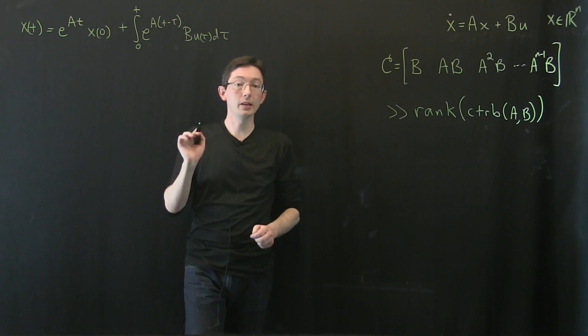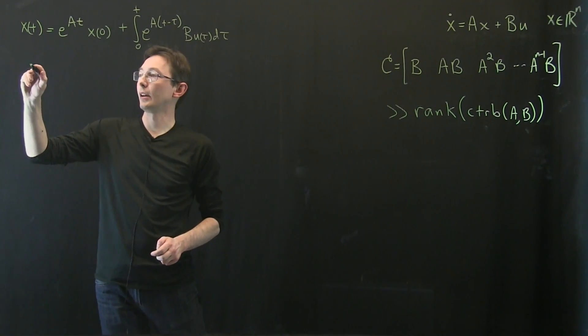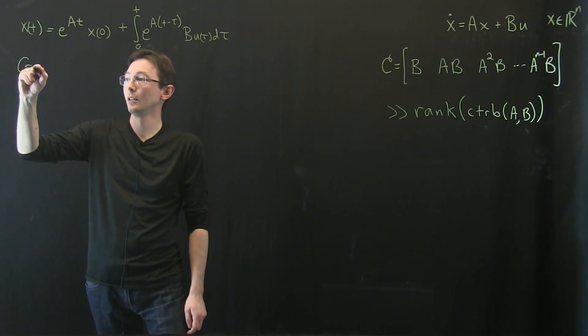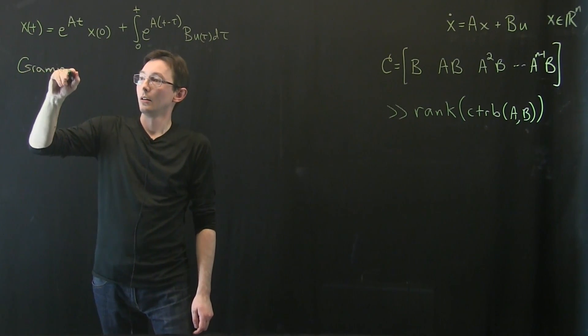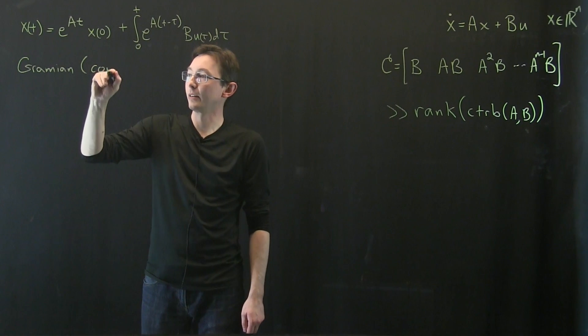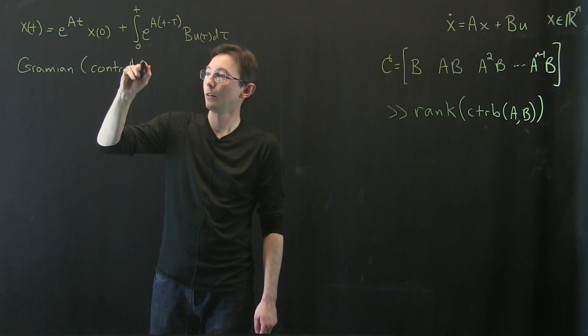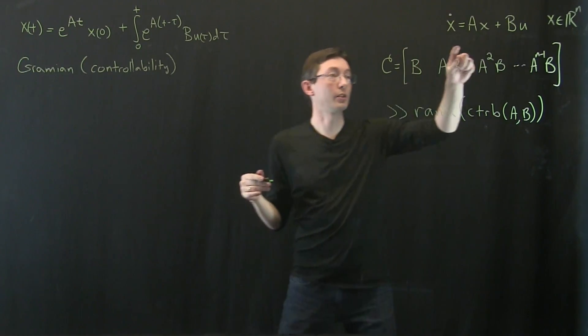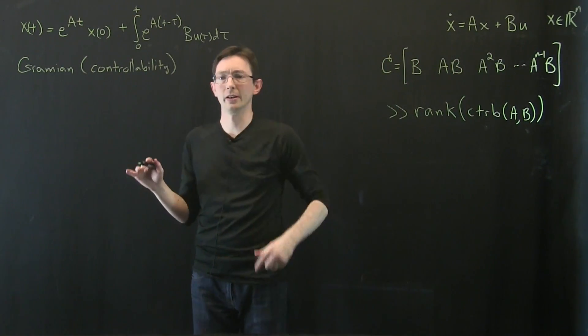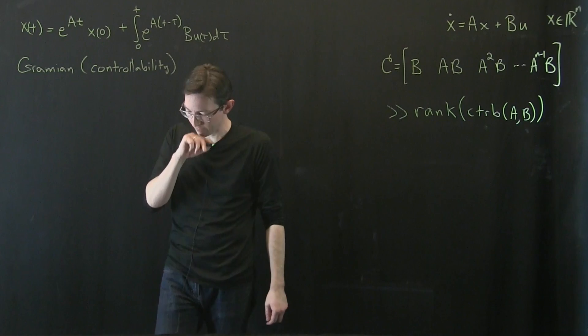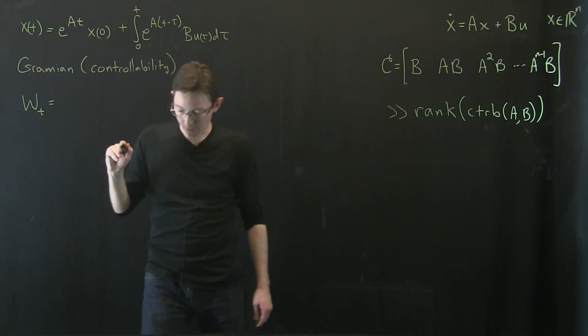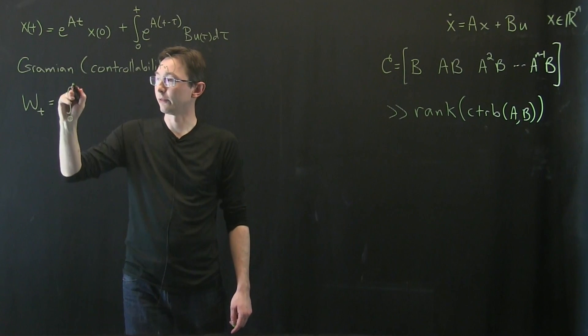And there's something really, really important called the controllability Gramian. There's also something called the observability Gramian when we start doing measurements, but we'll deal with that later.